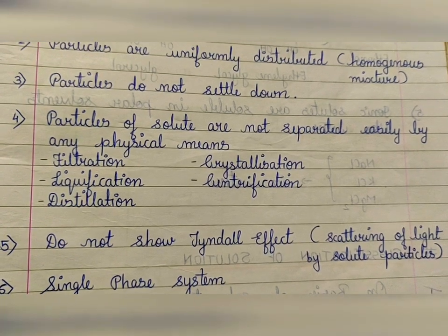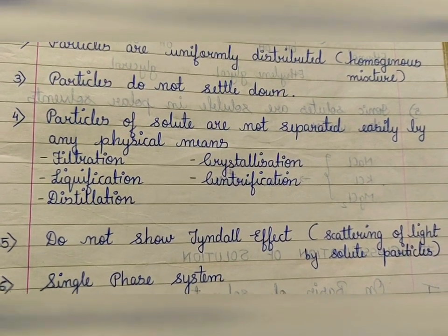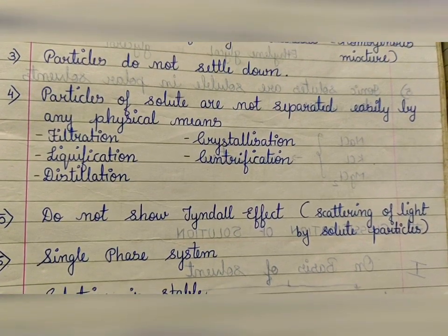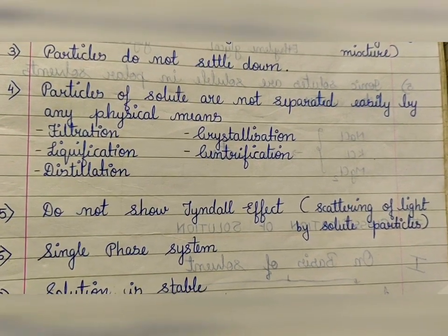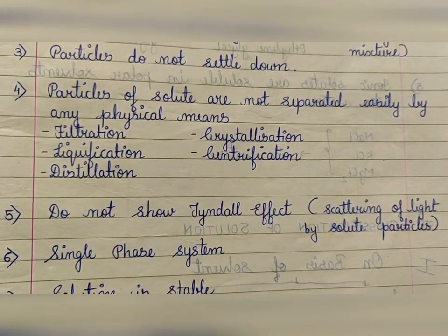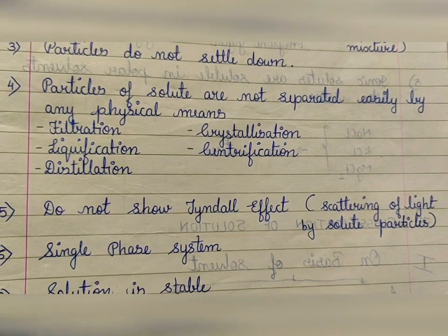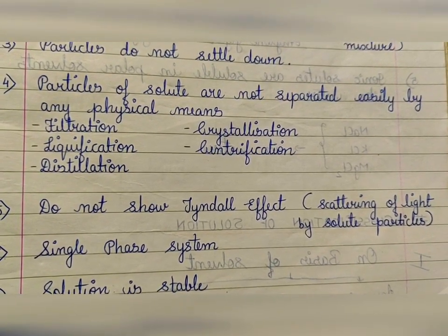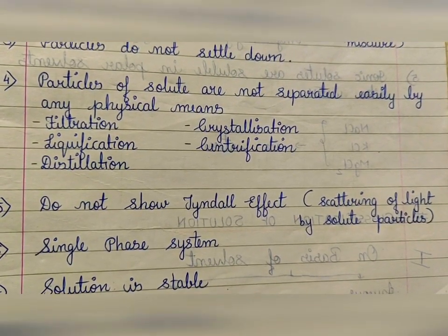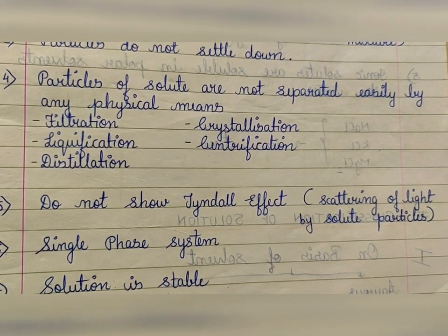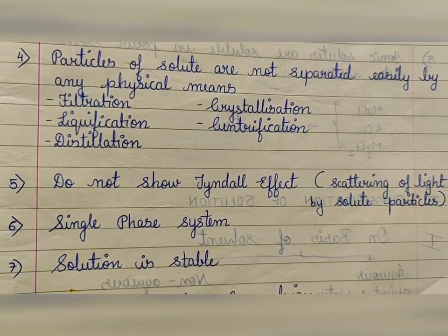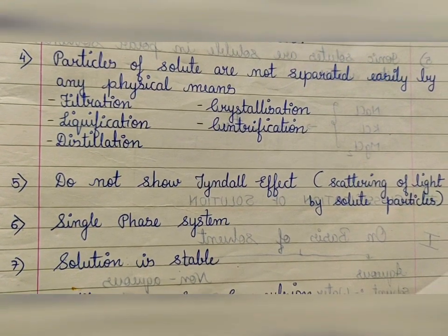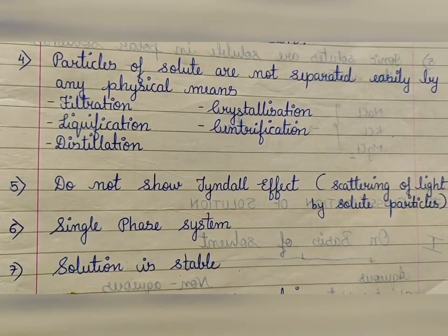Why can't they be separated? Because they are completely soluble — it is difficult to separate them due to their high solubility. Next: solutions do not show the Tyndall effect, meaning scattering of light by solute particles. As they are completely dissolved, no scattering of light is observed. A solution is a single-phase system — you will see a single physical state: solid, liquid, or gas.